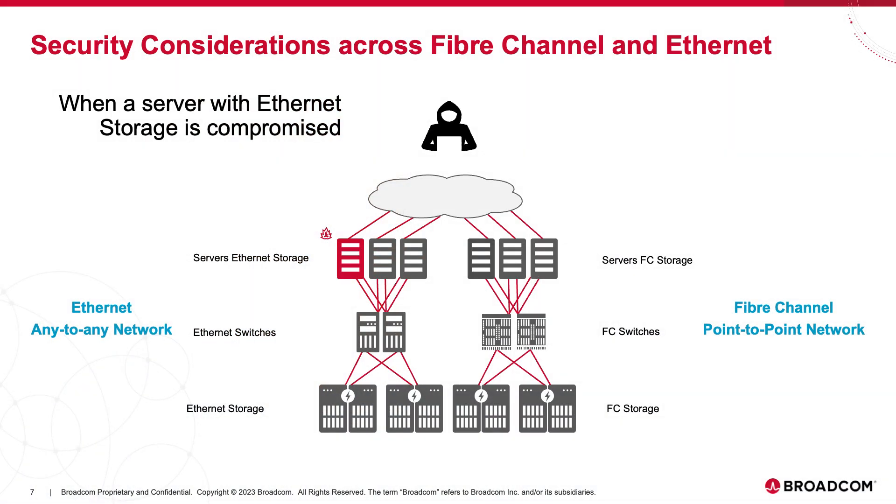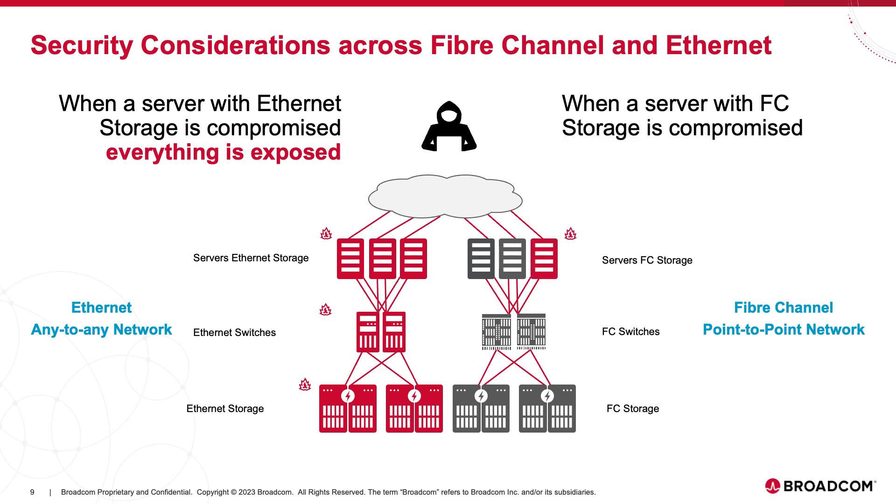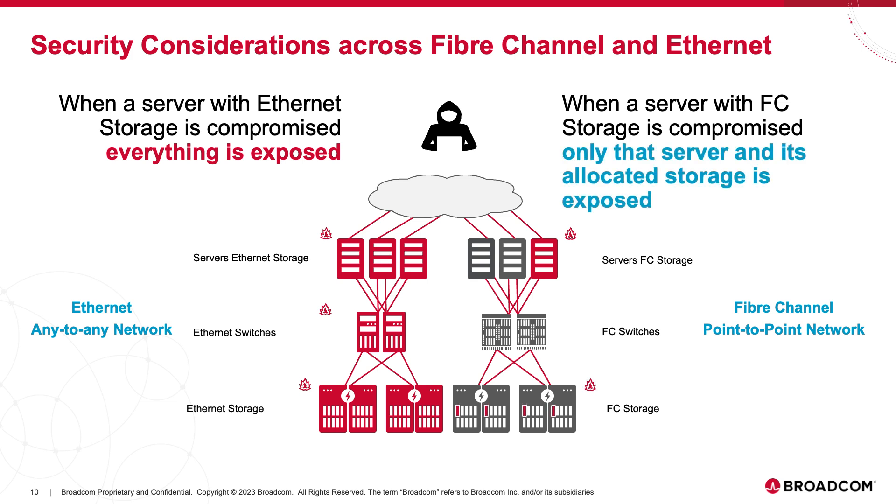To ensure high availability and redundancy, best practice has always been to deploy with redundant fabrics. Fibre channel is very unique in that it mimics this internal bus architecture, which means all communication is point-to-point. So if there is a data breach and a server is compromised, that server cannot sniff on the storage network to gather information about where other servers or storage arrays are and then start attacking them. It only has access to what it's provisioned to access.